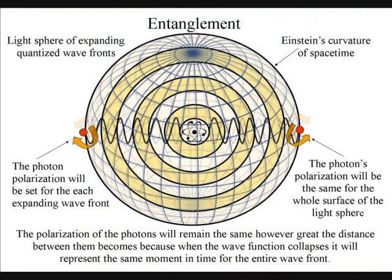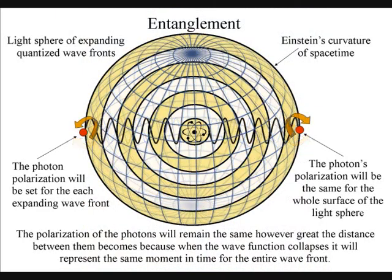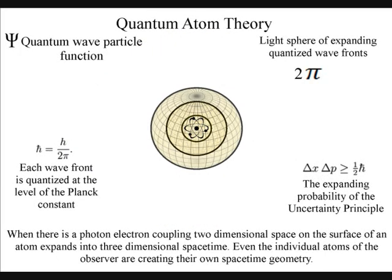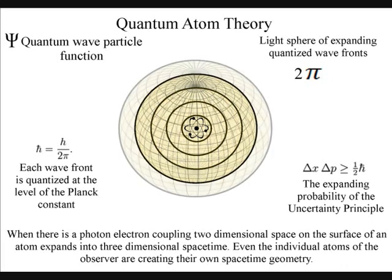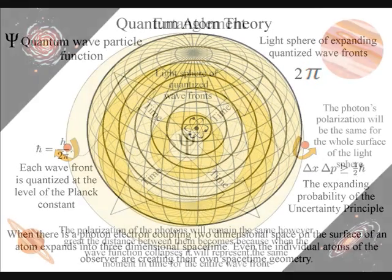We have entanglement because the polarisation will be set at the creation of each expanding wavefront. The wavefront will expand in the form of a light sphere, and the polarisation will remain the same for the entire surface of the light sphere, no matter how large it becomes.